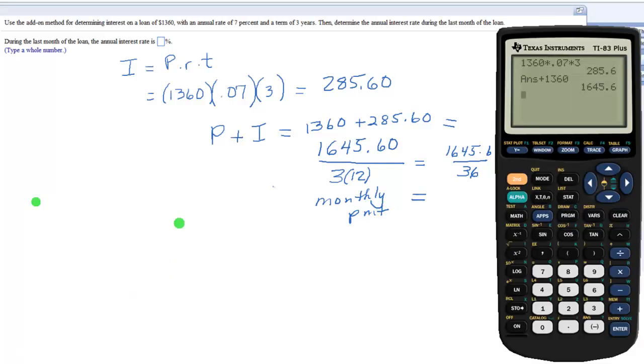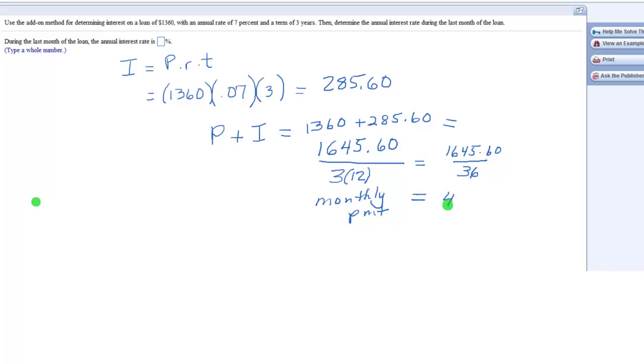Okay, so what is that? Let's see. Divide it by 36. So it's looking like $45.71 or $0.72. We're going to approximate, so let's do $45.71.